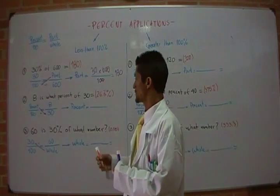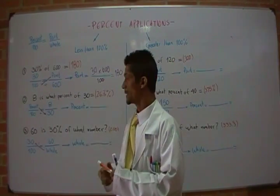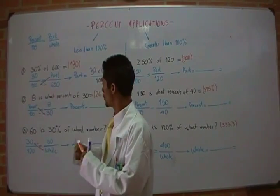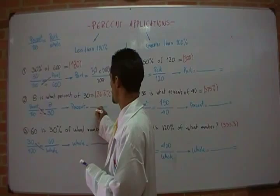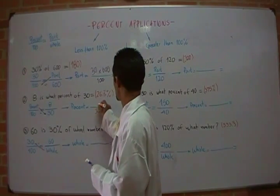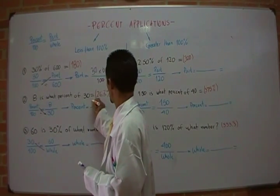The second situation is related to finding the percent when we are given the part and the whole quantities. Again, since 30 is in diagonal from percent, 30 divides, and the other two numbers multiply.